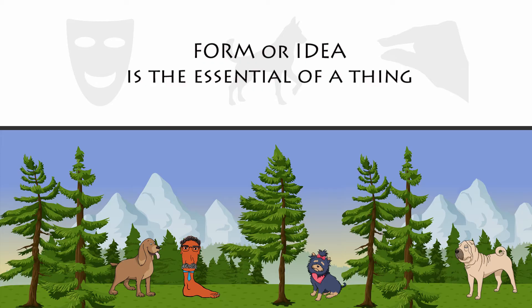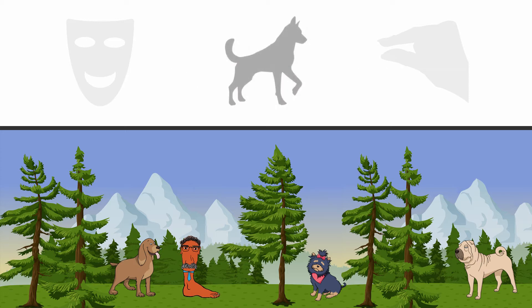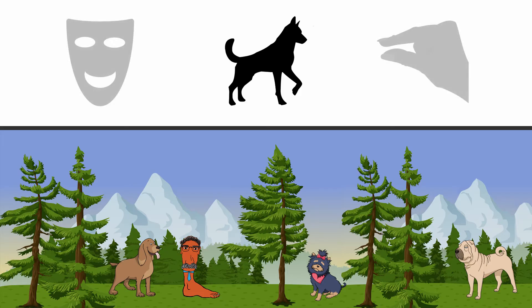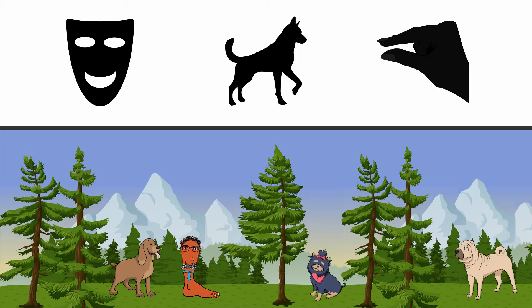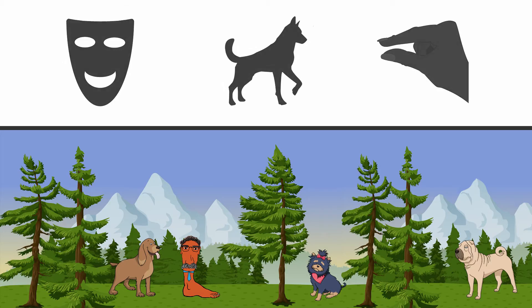Dogs can be of many different sizes, and they may smell differently depending on how clean they are, or be happy and sad. The form of dogness points to the essential feature of a dog, regardless if it is small or large, clean or dirty. However, here comes the twist: ideas for Plato are not ideas in our head. They are not just mental ideas. They exist in themselves, independent from us. They are real, and in fact they are more real than all individual things. According to Plato, they exist in another realm — the world of forms.